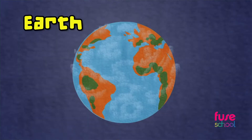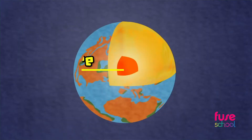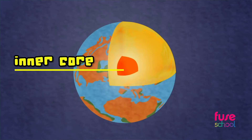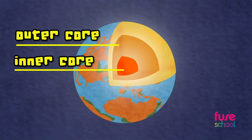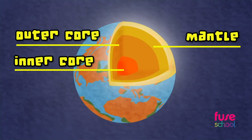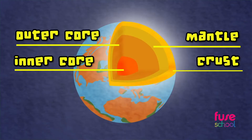Planet Earth is actually made of four distinct layers: the inner core, the outer core, the mantle, and the crust. Each layer has different thicknesses and is composed of different materials.